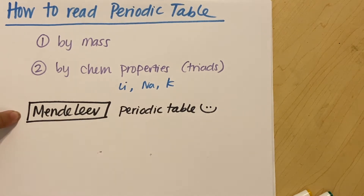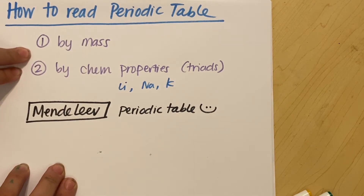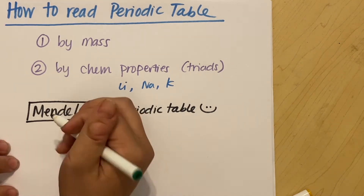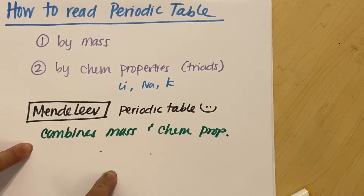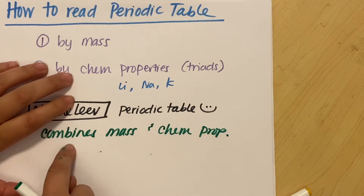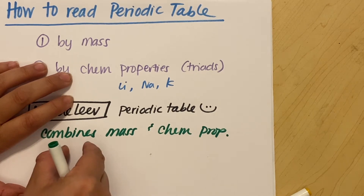Mendeleev figures out that the periodic table needs to be categorized by both mass and chemical property. He kind of combines these two together. The way he does that is he organizes the periodic table so that you will have repeating triads that line up going up and down in your periodic table.